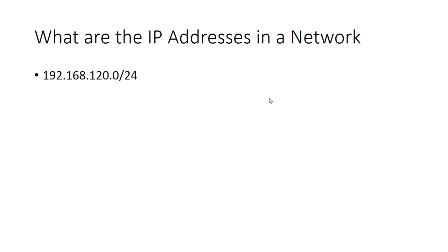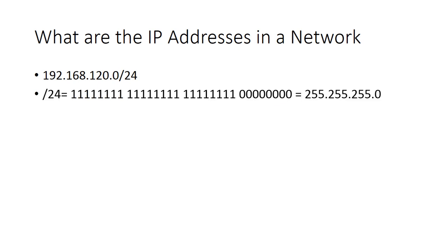For example, /24 means we have 24 ones in binary, and that means there will be eight zeros. So convert these 24 ones and eight zeros into dotted decimal format — that gives us 255.255.255.0.